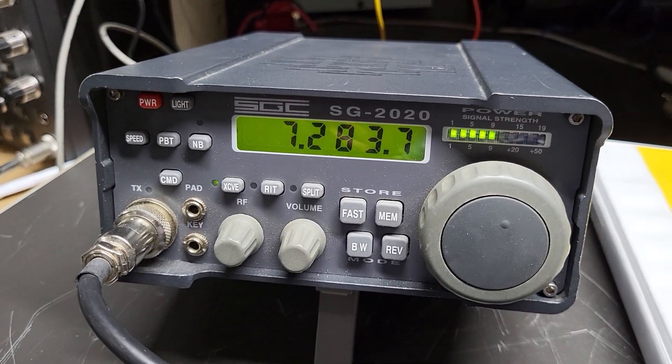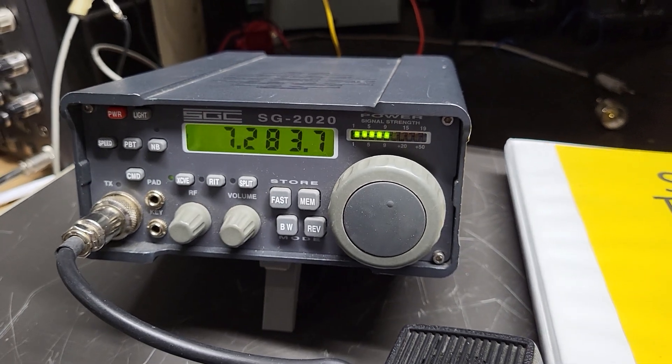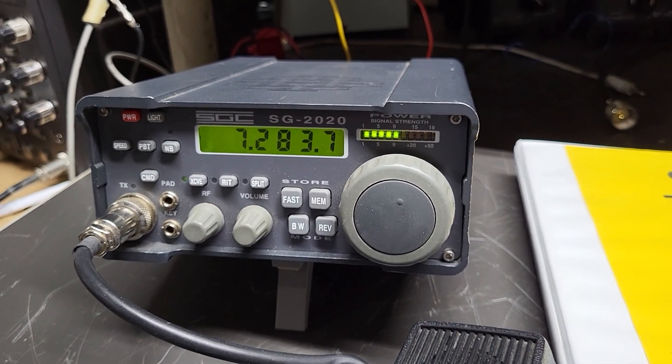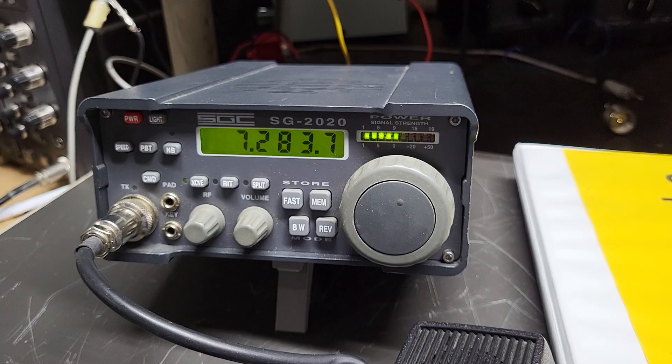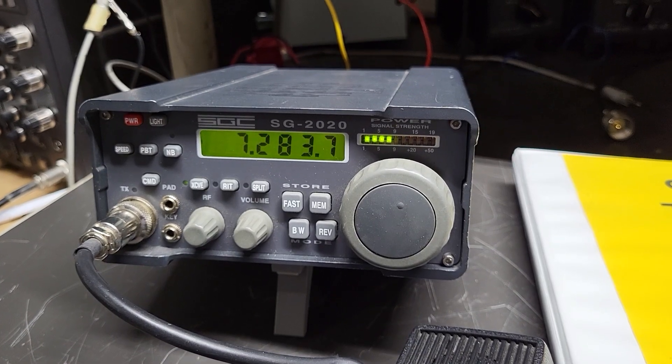Just look at that front panel. Isn't that nice? Great for backpacking or taking portable. This is the SGC model SG-2020 transceiver.